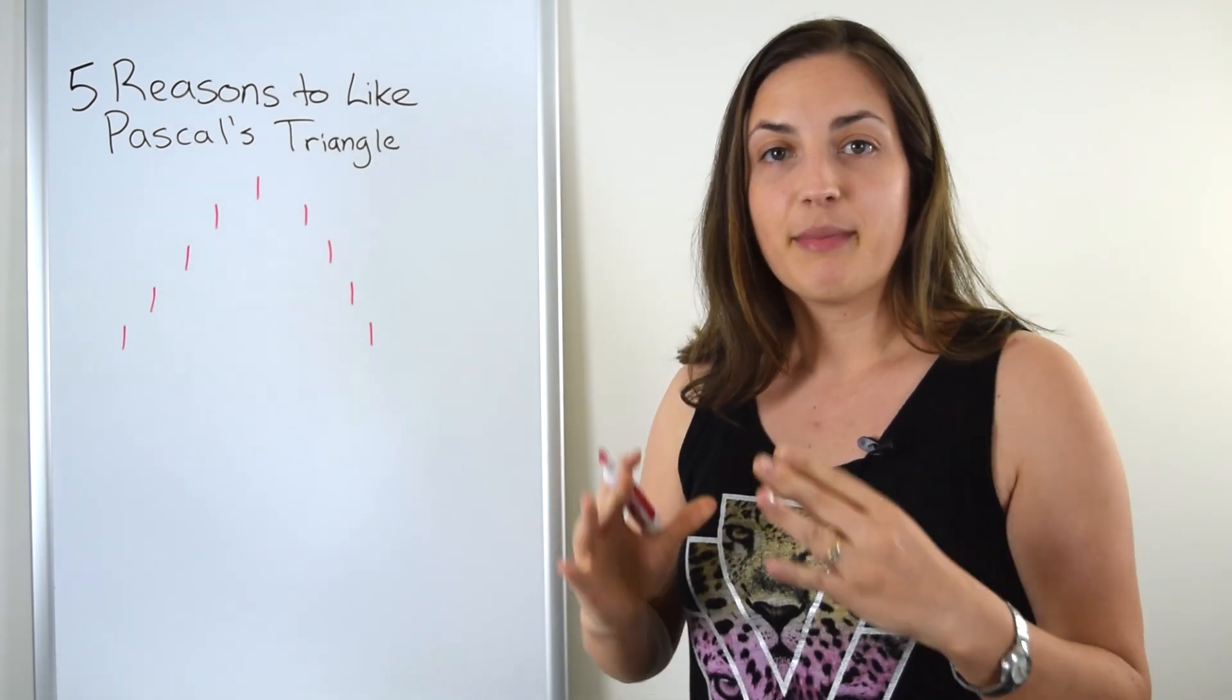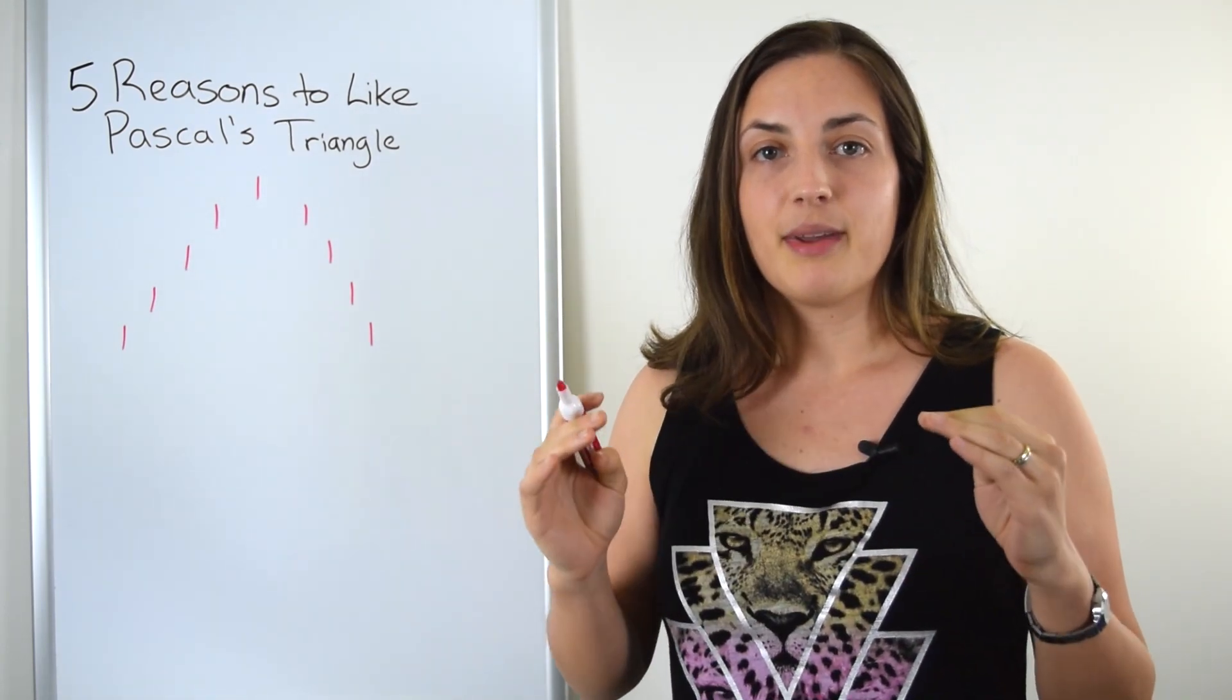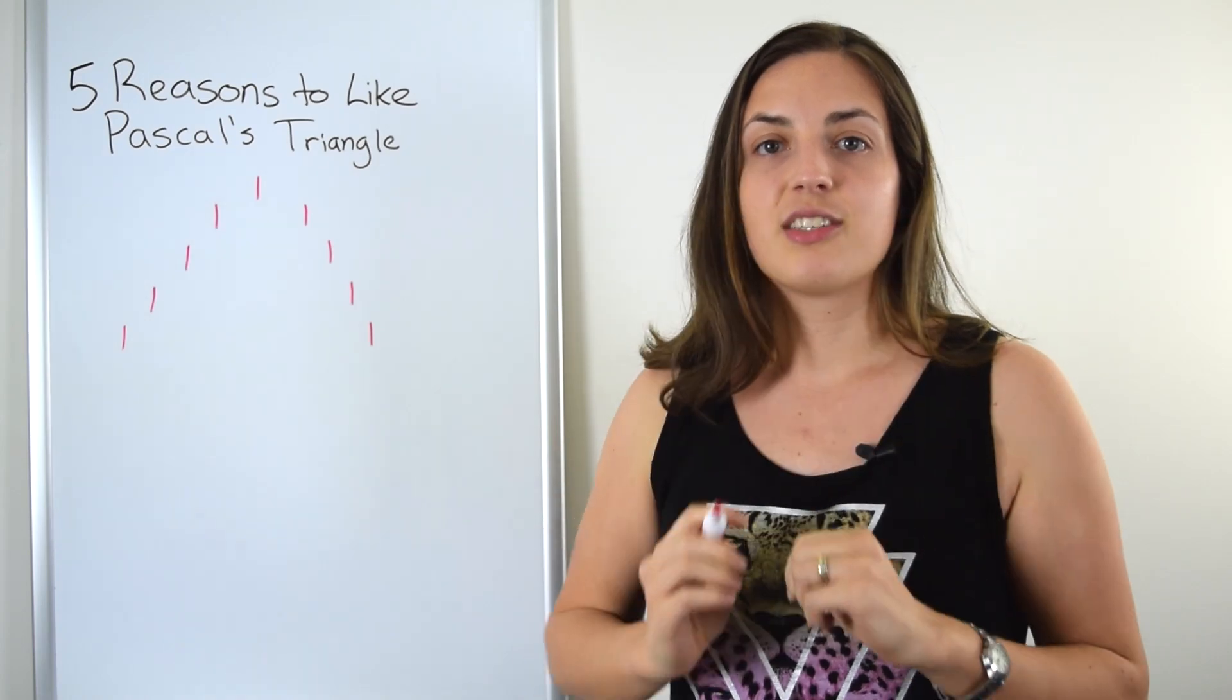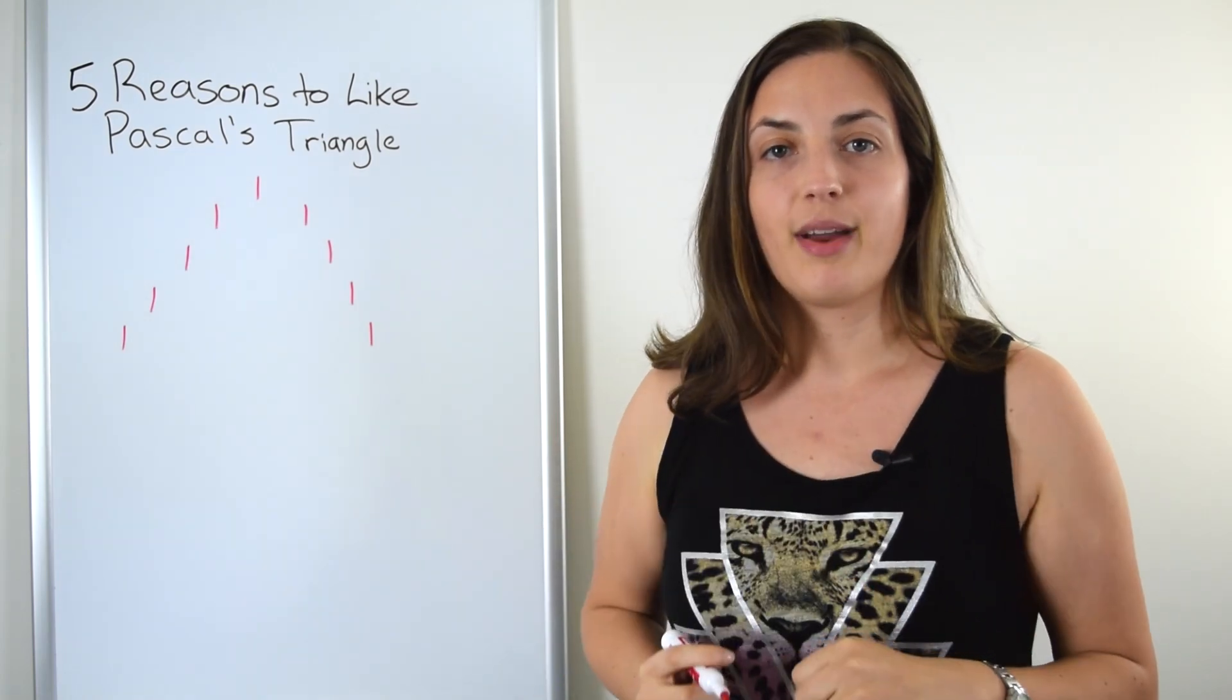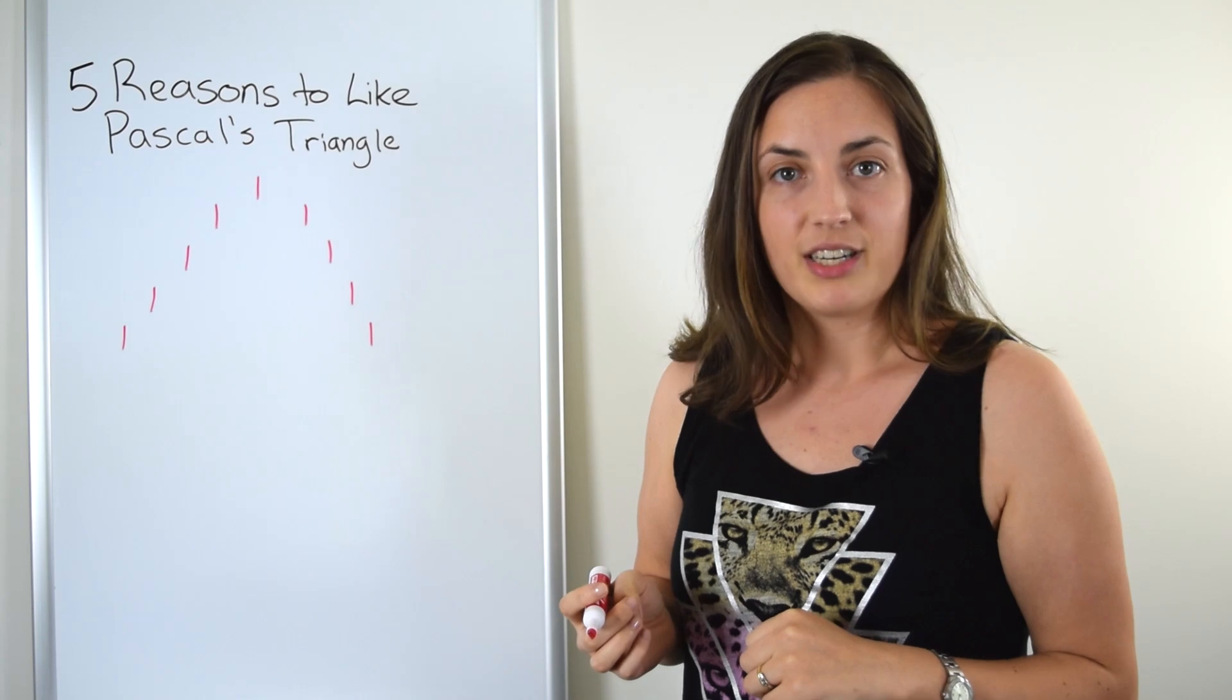Now how do you build the middle part? All you have to do is look at the two entries directly above the entry you want to write down. All you have to do is add up those two entries. Pretty simple, right?